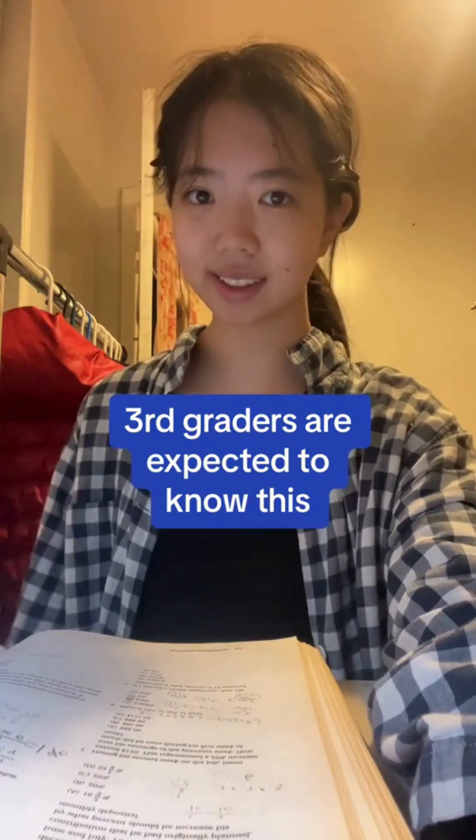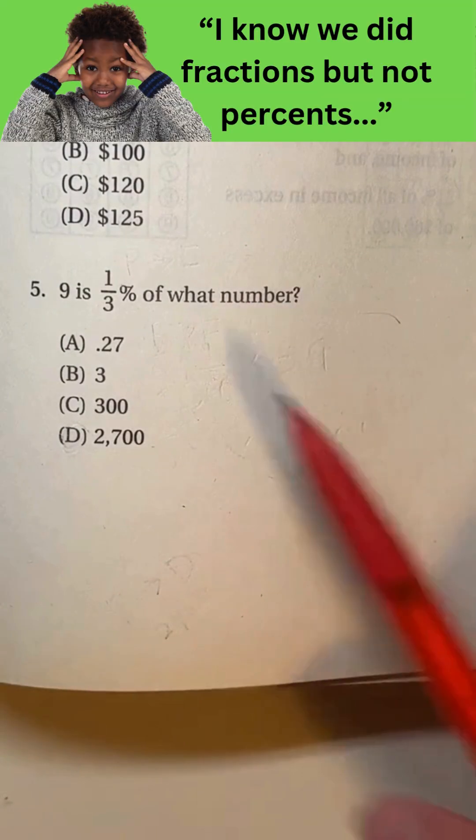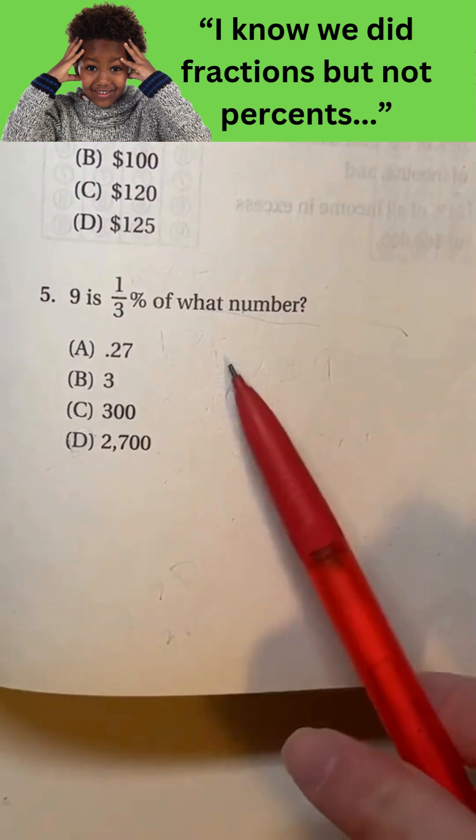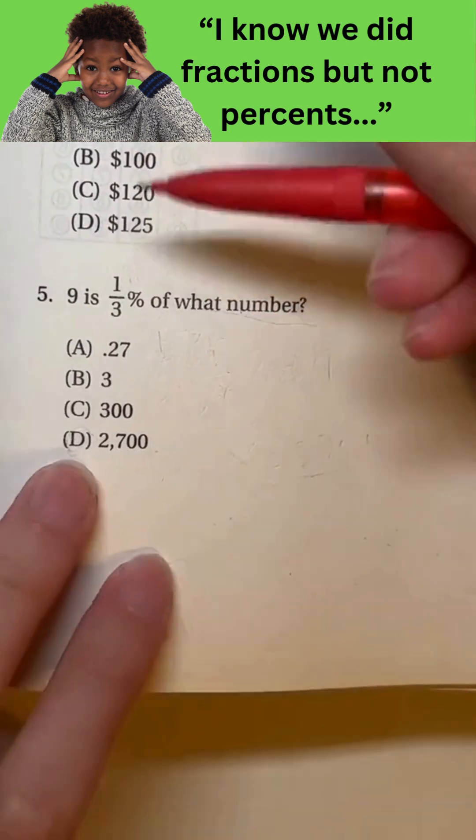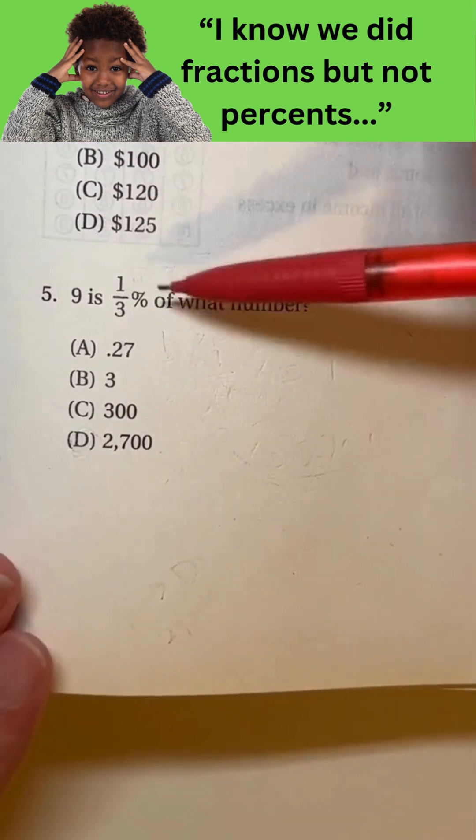Third graders are expected to know this. 9 is 1 3rd percent of one number. So how do we rewrite this as an equation? Well, let's convert the percentage into a fraction.